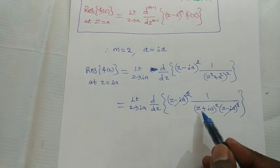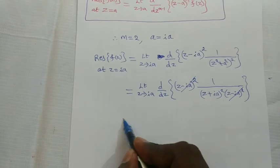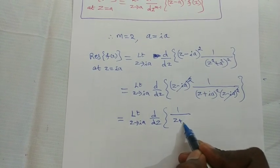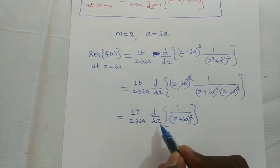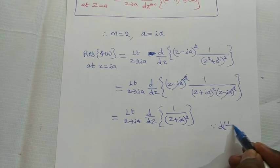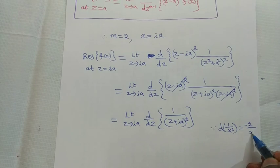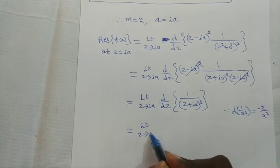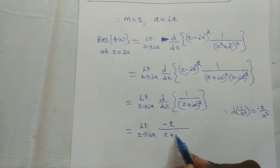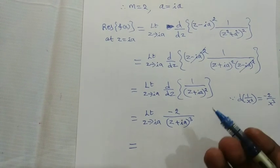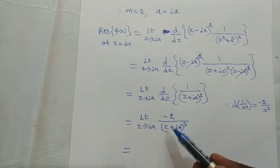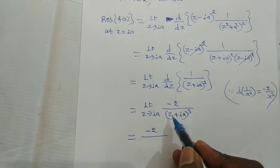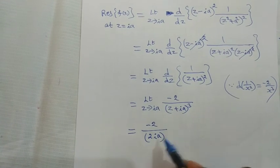Recalling that d/dx of 1/x² = −2/x³, differentiating 1/(z + ia)² gives −2/(z + ia)³. Then substituting z = ia: we get −2/(ia + ia)³ = −2/(2ia)³.